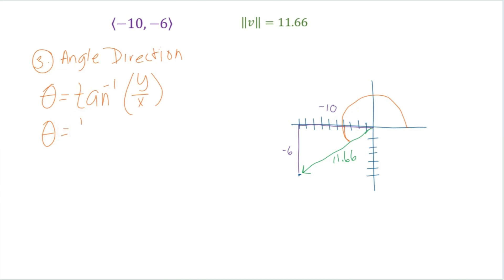So we're going to have theta is equal to the inverse tangent of y over x. So if we fill in our x and y coordinate, negative 6 over negative 10, which is the same thing as 0.6.